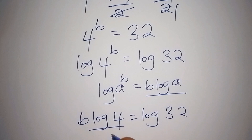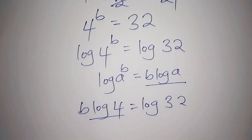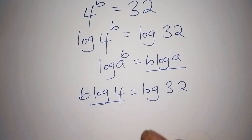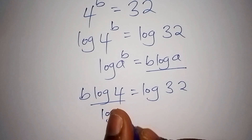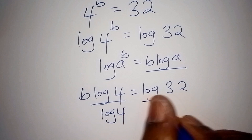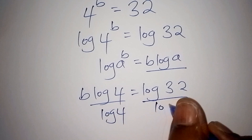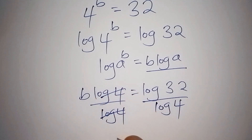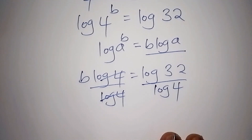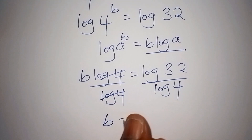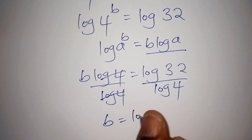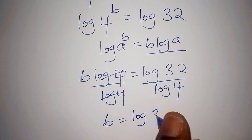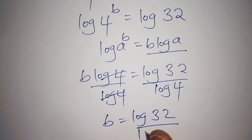So applying that law, log of 4 to the power of b becomes b log 4, and this is equals to log of 32. For us to have b alone, we shall divide both sides by log of 4. So log of 4 and log of 4 cancel, giving us b is equals to log of 32 all over log of 4.